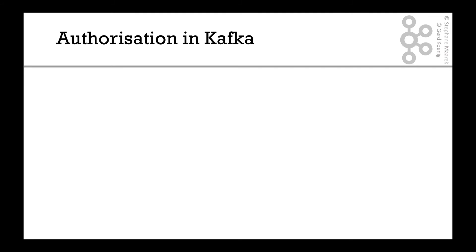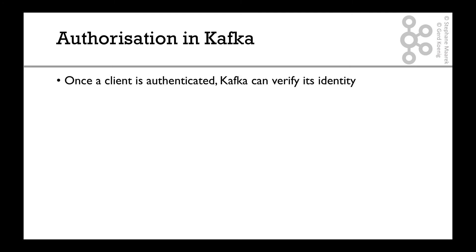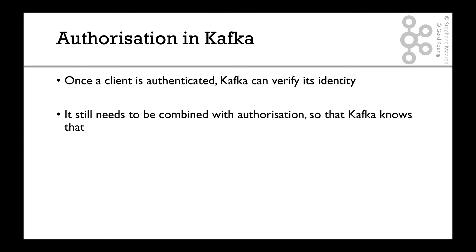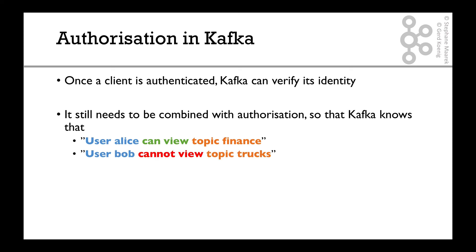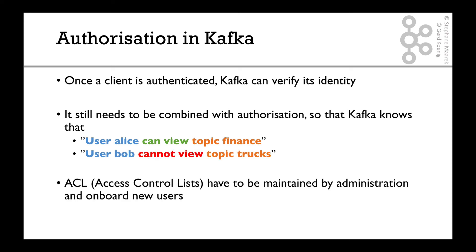What about authorization? Once a client is authenticated, Kafka can verify its identity and give the user a name. But it still needs to be combined with authorization rules so that Kafka knows, for example, that user Alice can only view the topic finance, and user Bob cannot view the topic trucks. ACLs — access control lists — will have to be maintained by administrators to onboard new users and allow applications to source or write data.